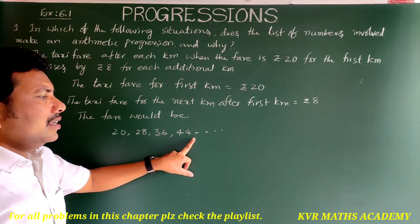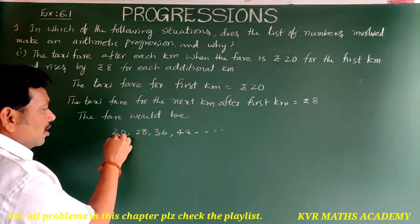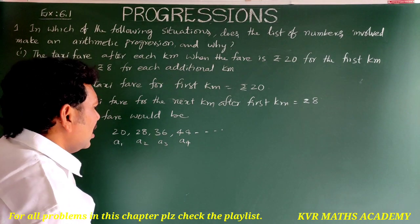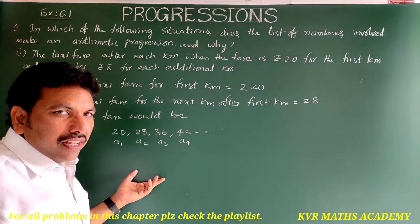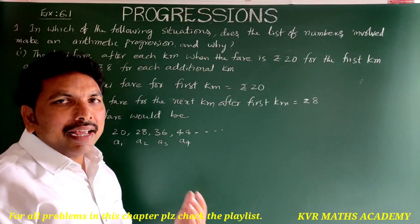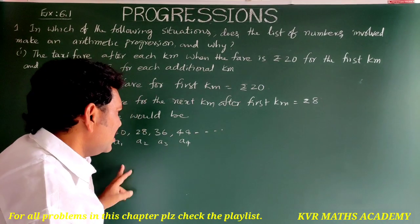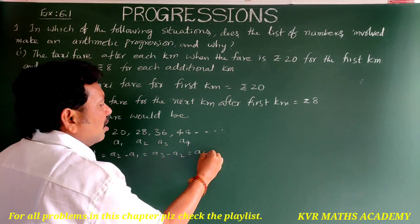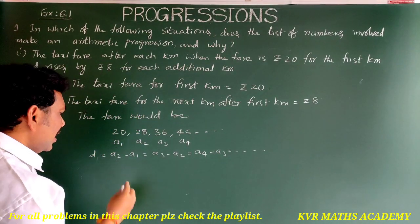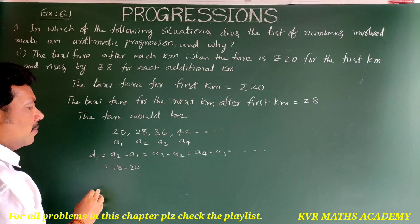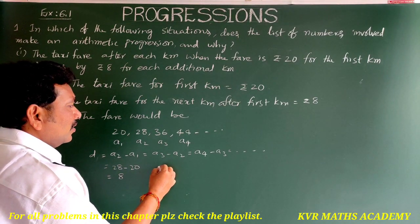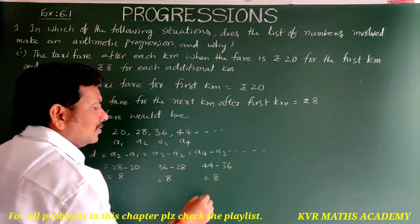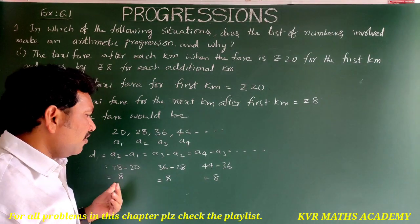So the sequence is 20, 28, 36, 44. Here a₁ = 20, a₂ = 28, a₃ = 36, a₄ = 44. To check for AP, we verify the common difference is the same. a₂ - a₁ = 28 - 20 = 8; a₃ - a₂ = 36 - 28 = 8; a₄ - a₃ = 44 - 36 = 8.